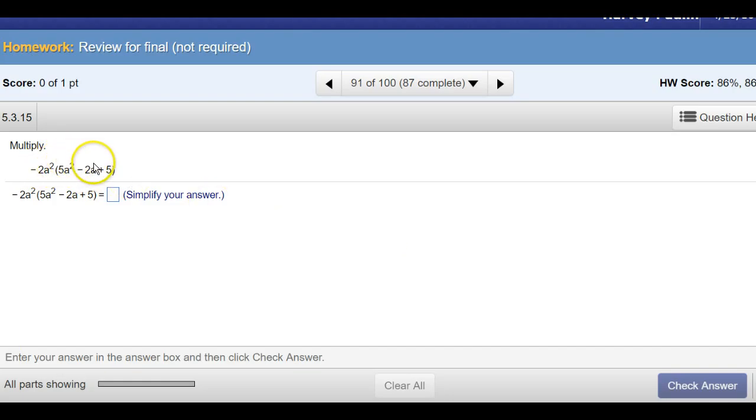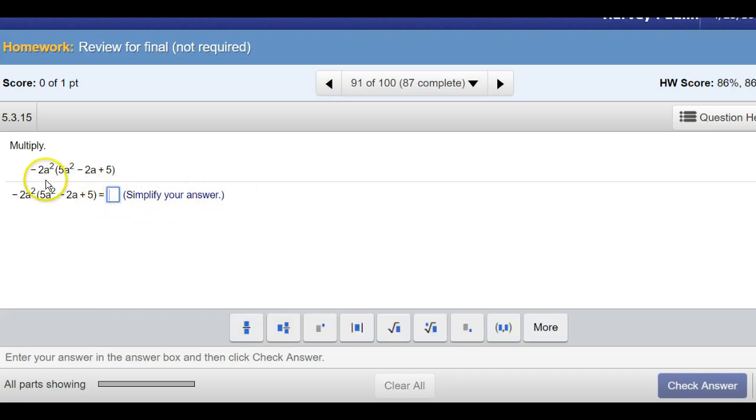All right, here we're distributing. And again, you would write it out on your paper. I think I can just do it here. So, a negative 2 times 5 is a negative 10 a to the, did you say 4th? That is correct. Now, we have a negative times the negatives. That's going to give us a positive. For a to the third. For a carat third. And then we have a negative 2 times 5, so that's a negative 10 a to the second. And I could check my answer. Distribute again. Check your signs. That looks good.